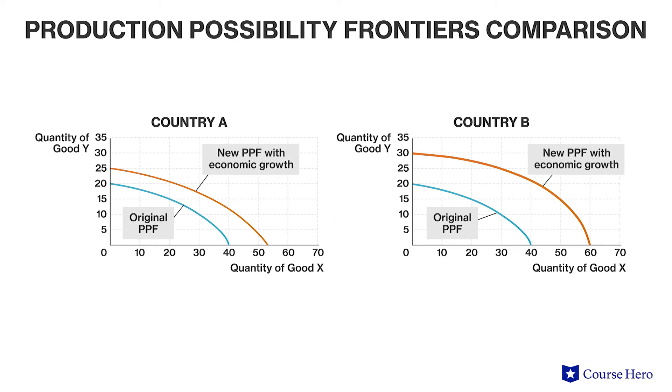If a country has a faster rate of economic growth, then it will have a PPF that shifts more to the right over time than a similar country with a slower rate of growth.